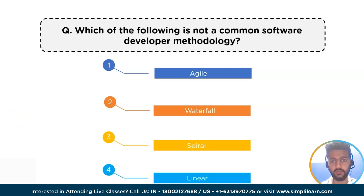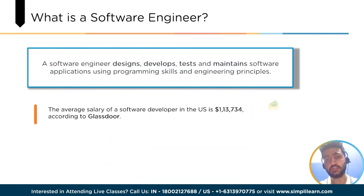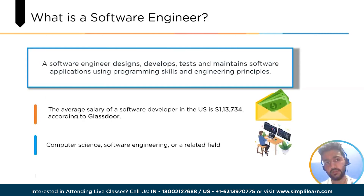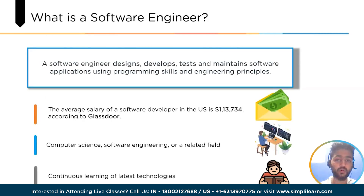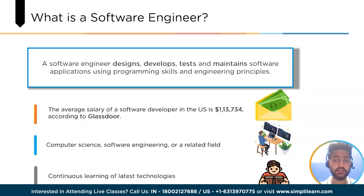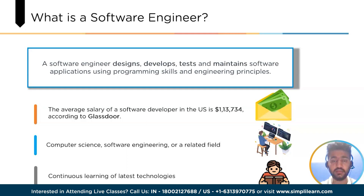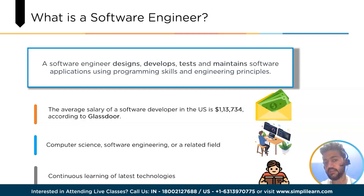Now let's move on to the first topic: what a software engineer is. A software engineer is a professional who uses engineering principles and programming skills to design, develop, test, and maintain software applications. They are responsible for creating high-quality software products that meet the needs of their clients or users. Software engineers typically work as part of a team, collaborating with designers, project managers, and other professionals. They may specialize in different areas such as front-end or back-end development, database management, app development, or security.